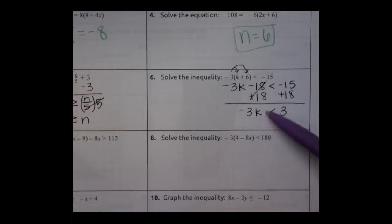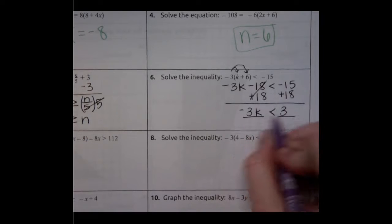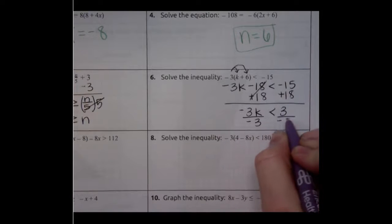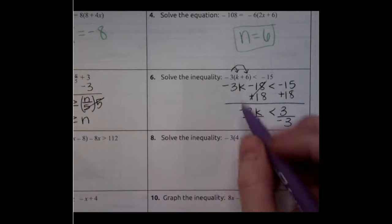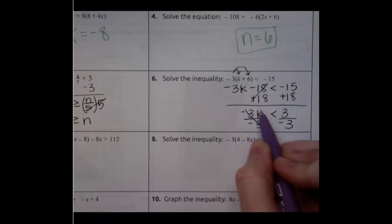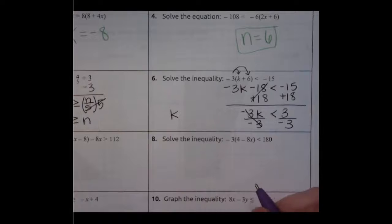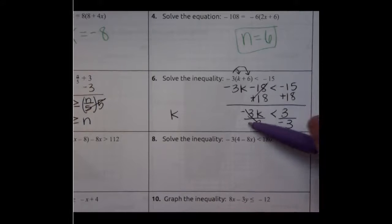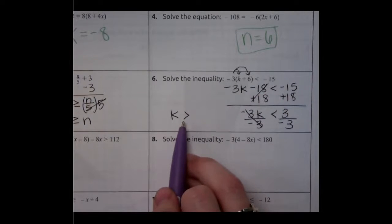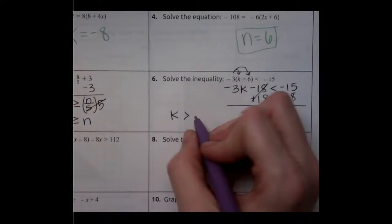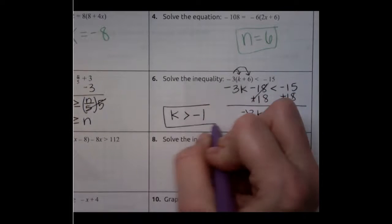Now this negative 3 is attached to the k by multiplication. So to do the opposite I need to divide on both sides by negative 3. I have to take the negative with the 3. This becomes a 1 so we're left with 1k or just k. Now when I divide by a negative I have to flip my symbol because that's one of the rules we have. So we flipped our symbol k is greater than and then 3 divided by negative 3 is a negative 1.